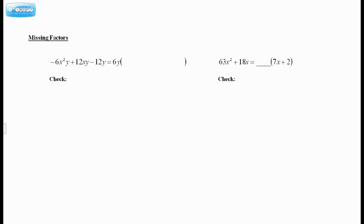All right. The next section just says missing factors. Well, this is actually easier than what we've been doing. We have a trinomial, and the factoring process has already been started. We just have to figure out what's missing. So I had a negative 6x²y + 12xy - 12y. And we can see a 6y has already been factored out out of all three of these terms. So what goes in the brackets here? Well, whatever's left over from these three terms.